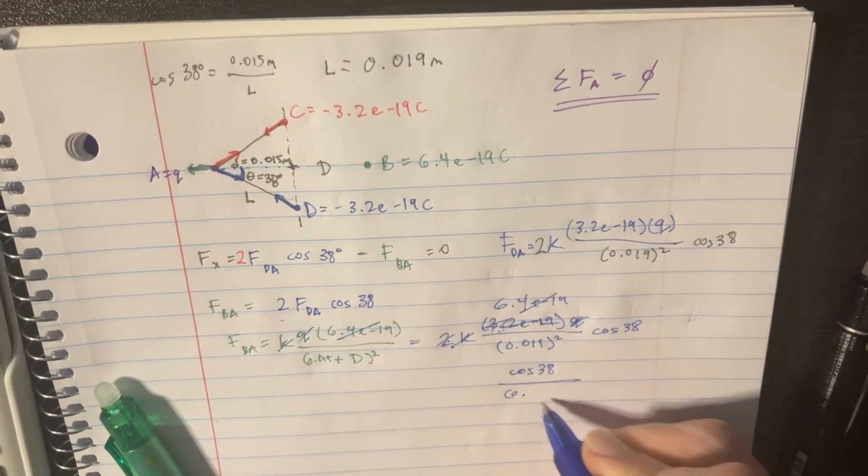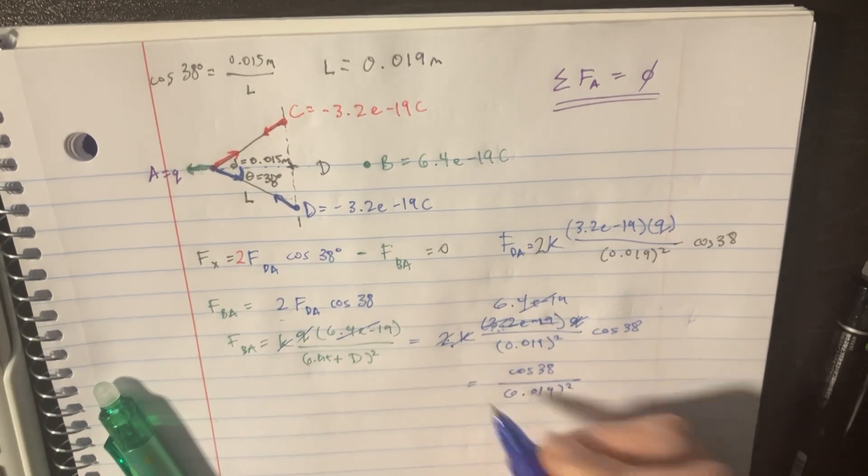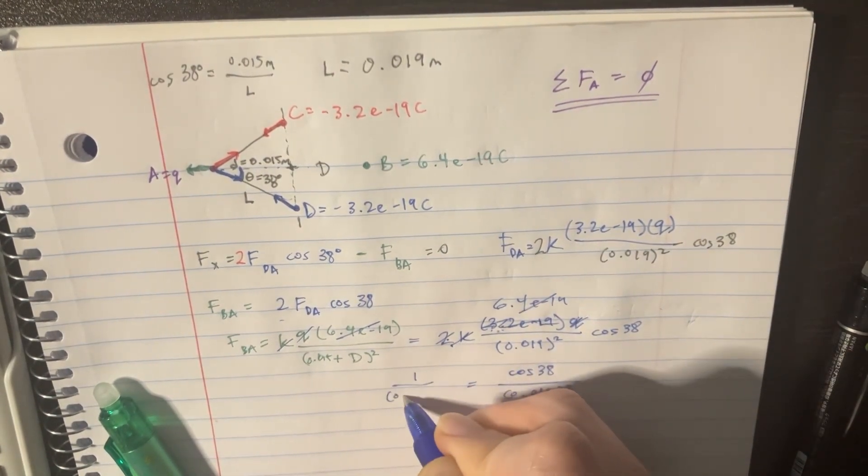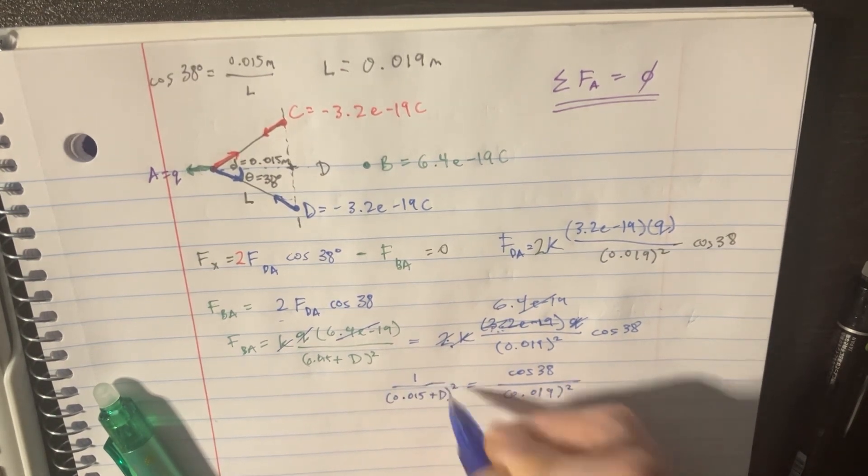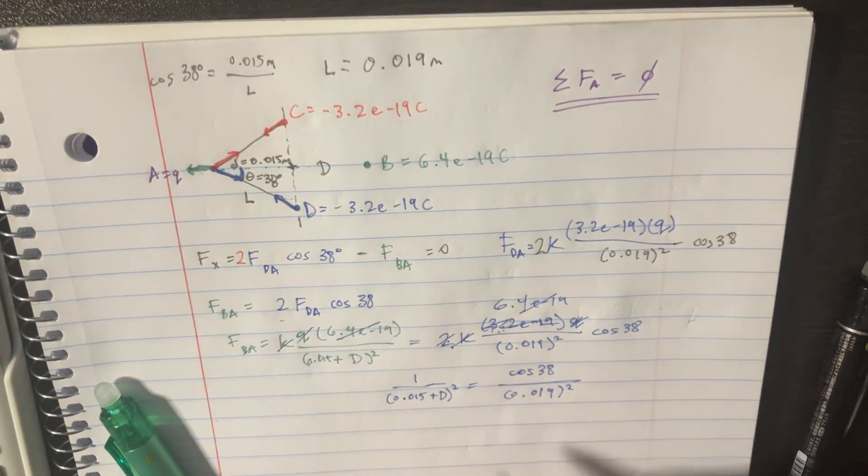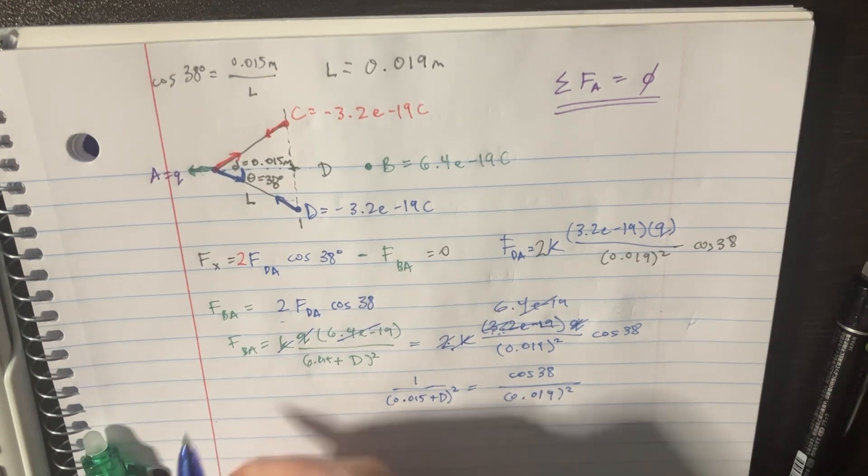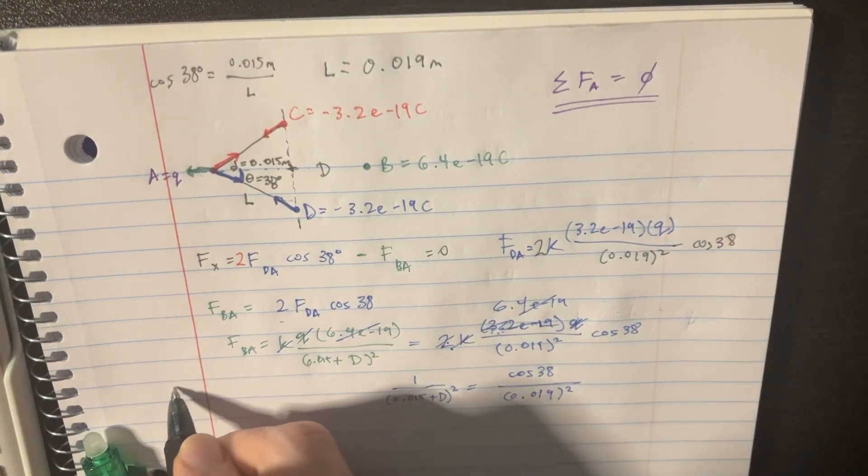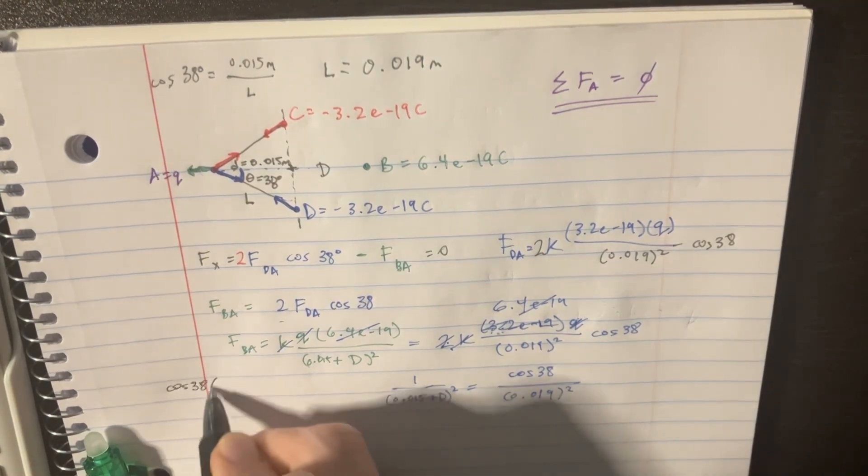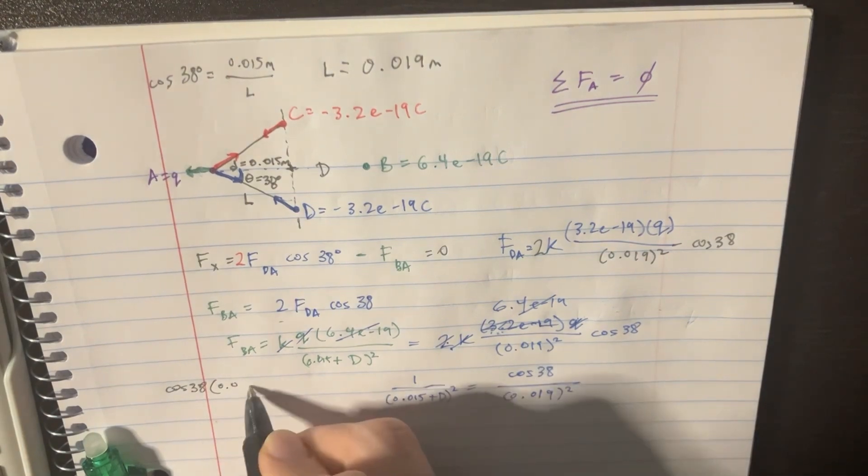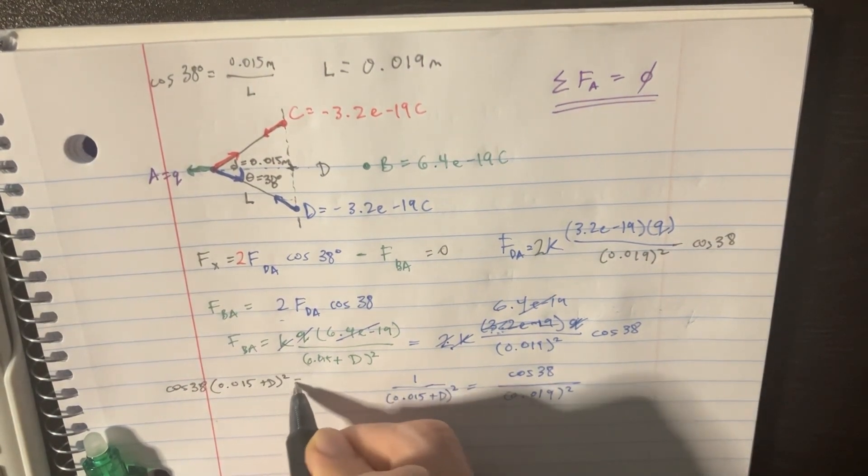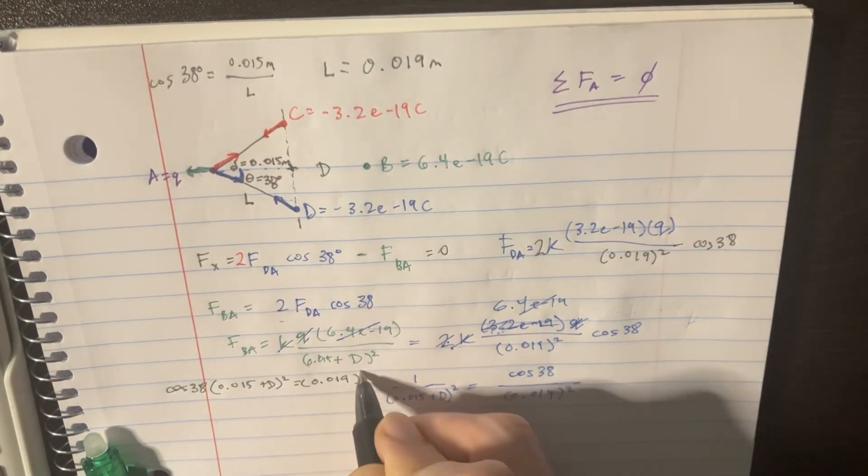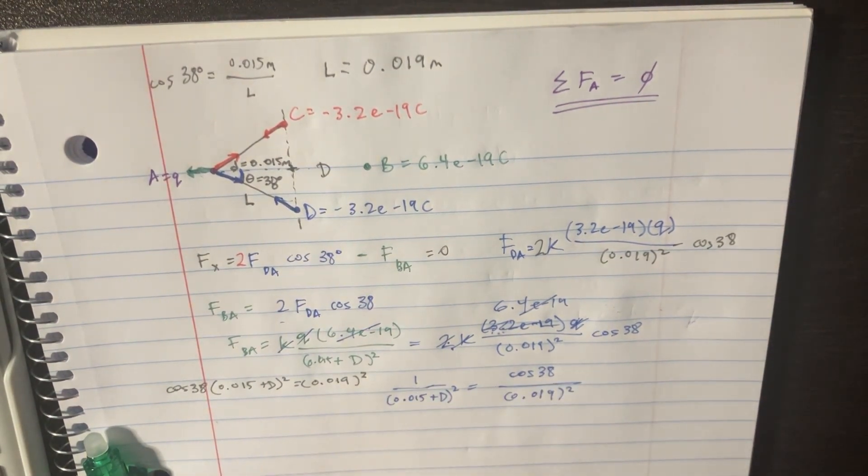And so all we're left with is literally that the cosine of 38 divided by 0.019 squared is equal to 1 over 0.015 plus D squared. And if we do the cross multiplication here, we'll find out that cosine of 38 times this is going to be equal to 0.019 squared.